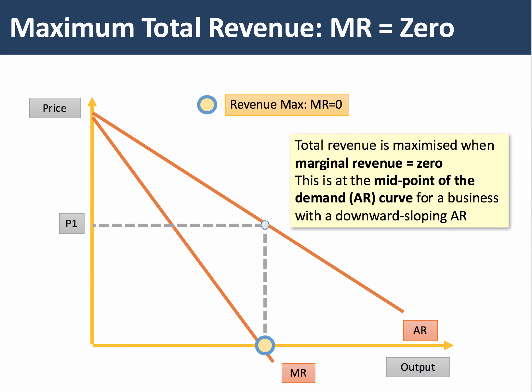Diagram two is when a firm maximizes revenue. A business maximizes revenue when marginal revenue is zero — when the next unit does not add anything to total revenue. That's the point where the MR curve intersects with the x-axis. You then draw up to the demand curve to find the revenue-maximizing price, which will be halfway along a downward sloping average revenue curve.